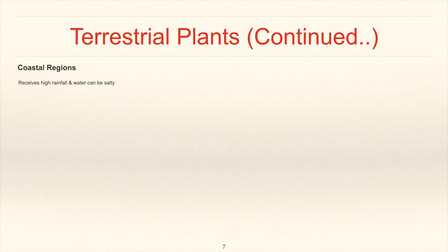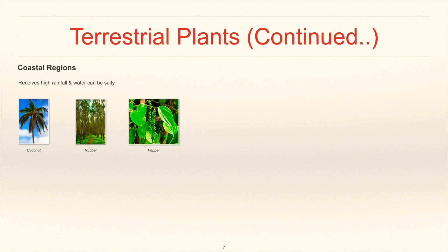Coastal regions receive high rainfall and the water can be salty. These are the places which are near to sea. The common plants that are found here are coconut, rubber and pepper. Pepper is also known as black pepper or black gold.